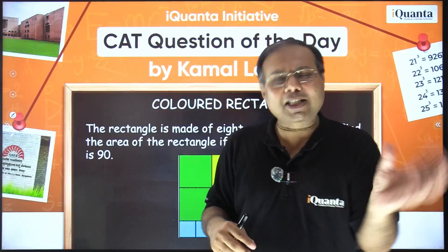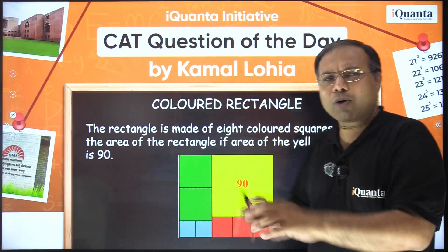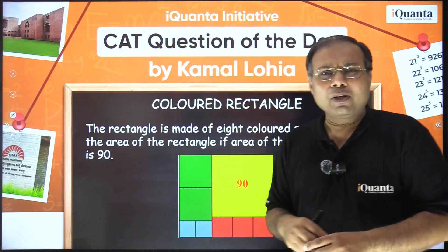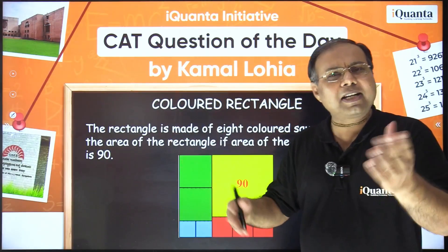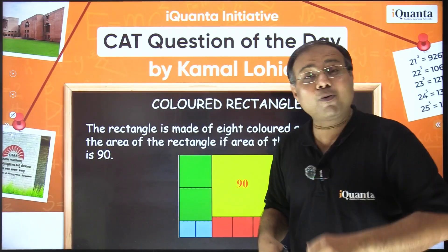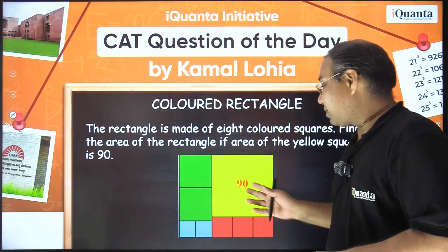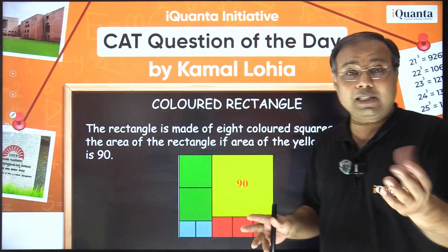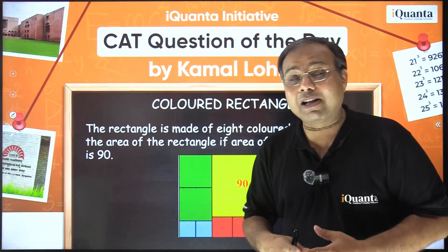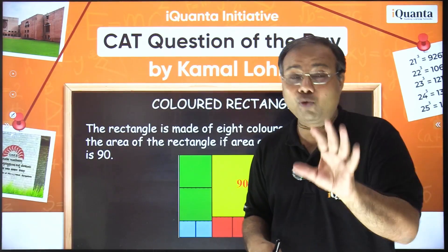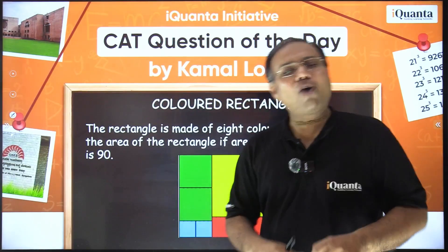Geometry is known for the errors you commit — we assume so many unnecessary things, like assuming angles are equal. Many students answered 90, and 180 was the most common wrong answer in the comments. Some students even wrote 270, along with other answers, though a few correct answers were there too.